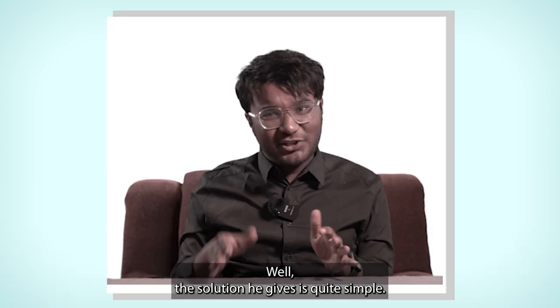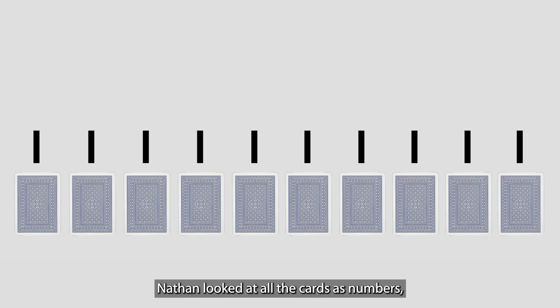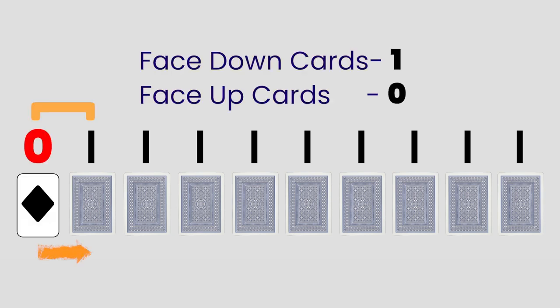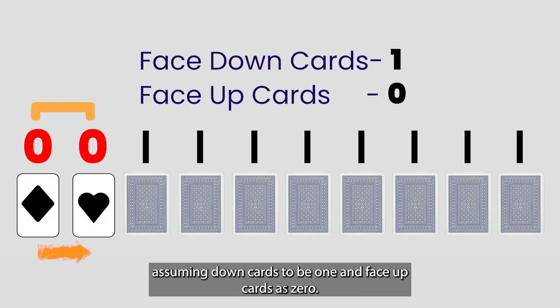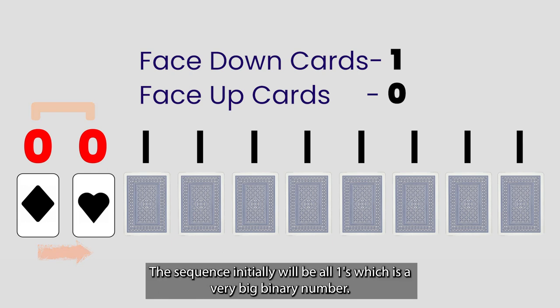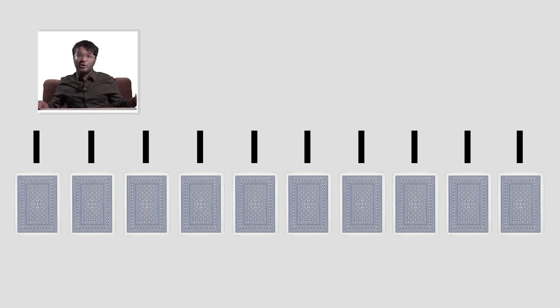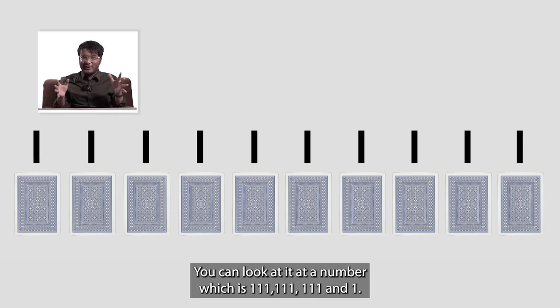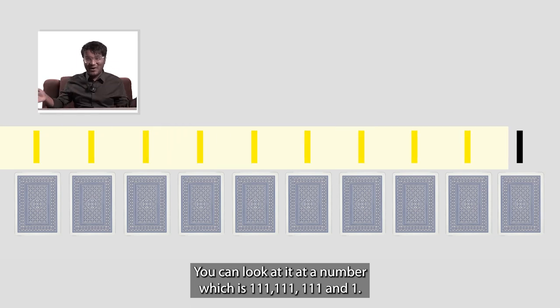Well, the solution he gives is quite simple. Nathan looked at all the cards as numbers, assuming face down cards to be one and face up cards as zero. The sequence initially will be all ones, which is a very big binary number. Or even simpler, you can look at it with a number which is 111, 111, 111 and 1.